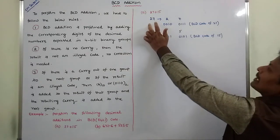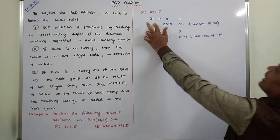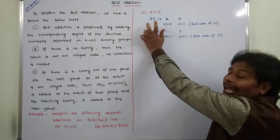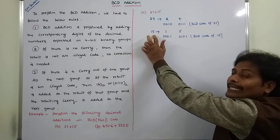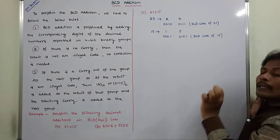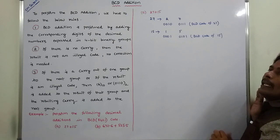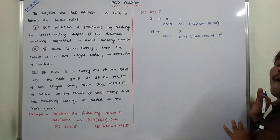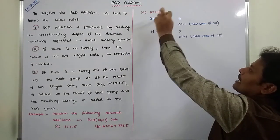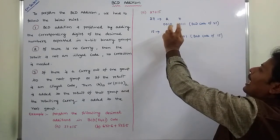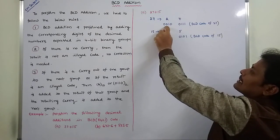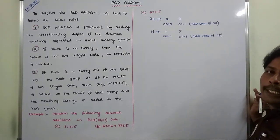In BCD code, 27 is an illegal code and 15 is also an illegal code. The valid BCD numbers are 0 to 9 only; from 10 onwards they are illegal codes. Because of this reason, 27 is written as 2 and 7, and 15 is written as 1 and 5. Each valid BCD digit is represented using a 4-bit binary group.